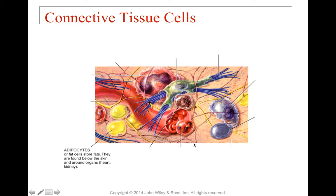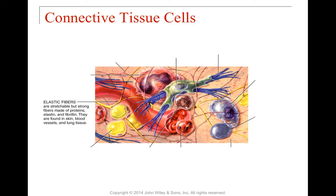Adipocytes are fat cells shown as yellow, and their job is to store fat. They're found all over the body, generally beneath the skin and around different organs. Elastic fibers are very stretchable — that's why they're called elastic. They're made of elastin, a very flexible protein, and also fibrillin. They're found in skin, blood vessels, and lung tissue. They diminish over time — as we age, we make less elastin and fibrillin, so our skin ends up sagging and getting wrinkles, and our lung tissue ends up with reduced capacity.